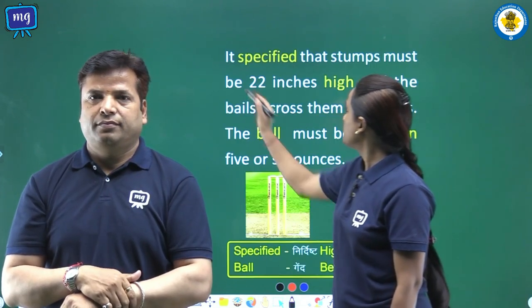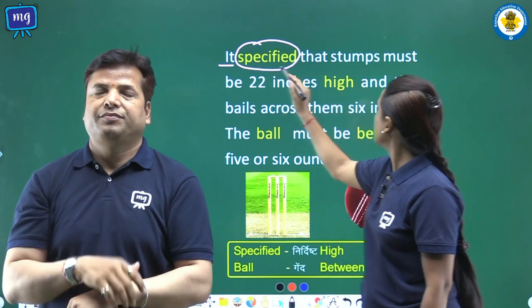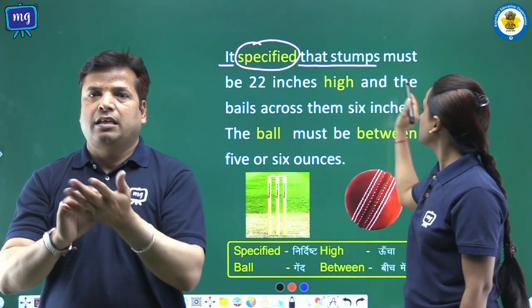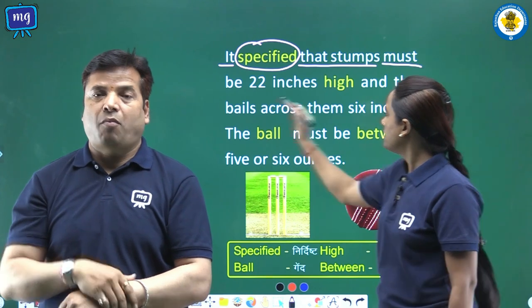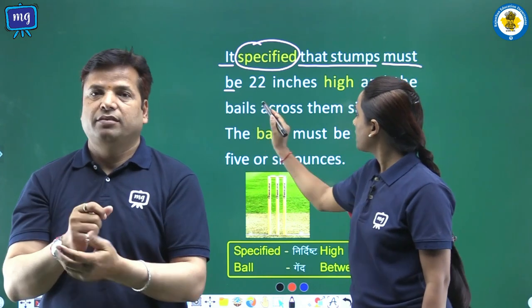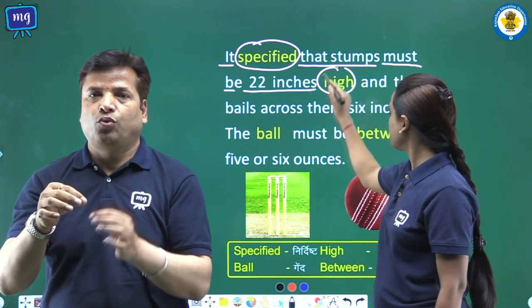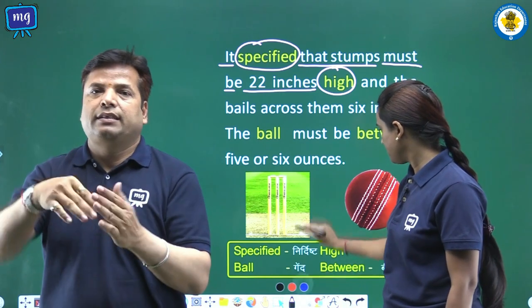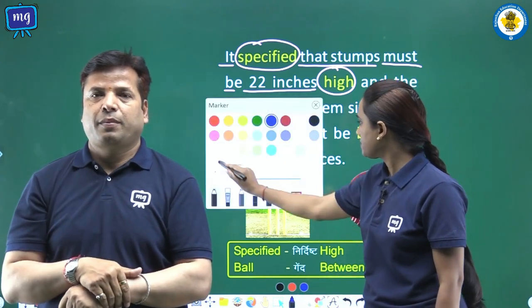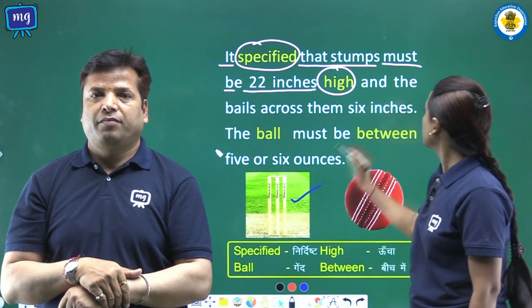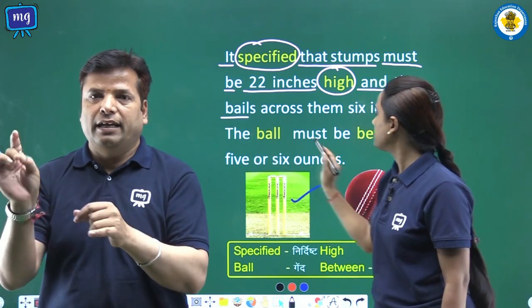It is specified that stumps must be 22 inches high and the bails must be below 4.5 inches.